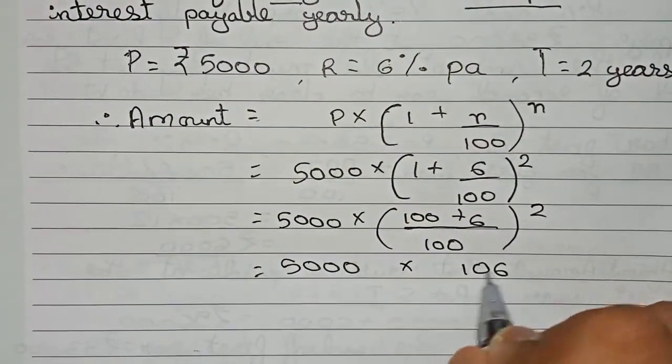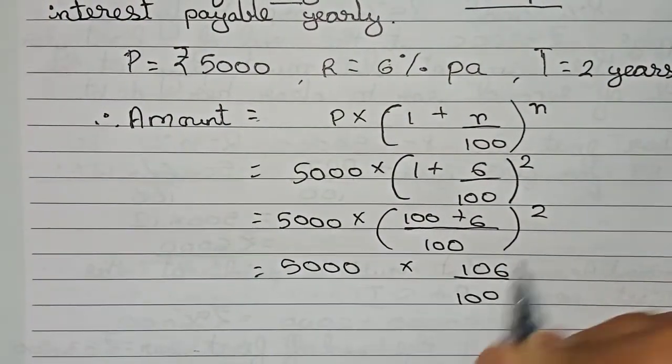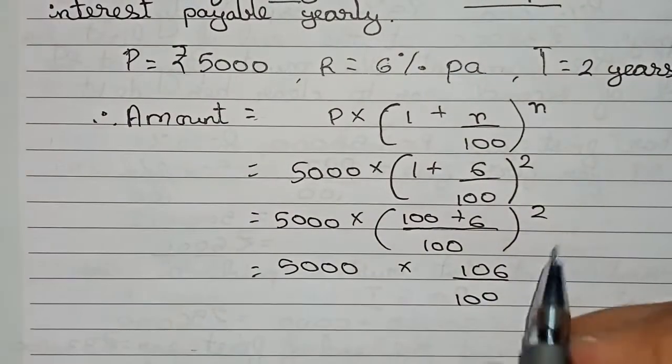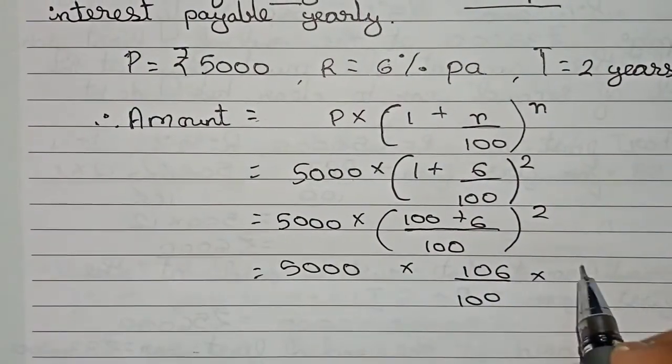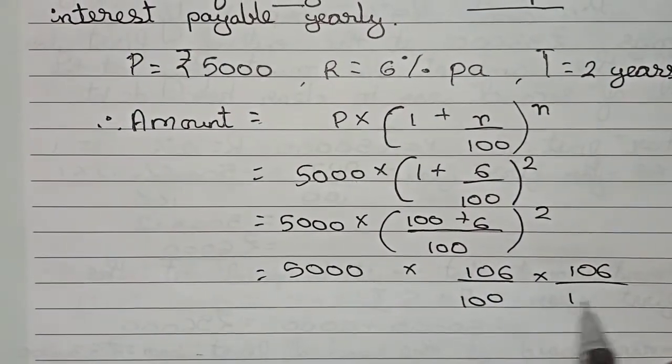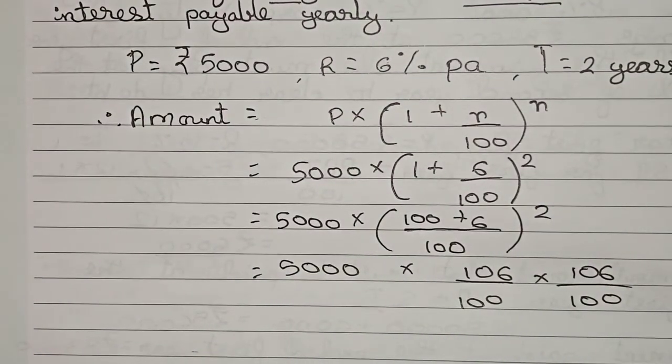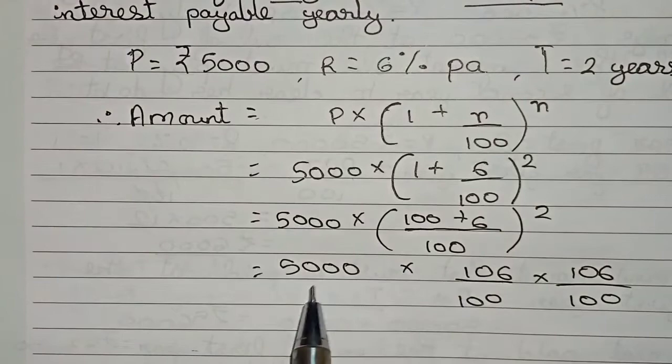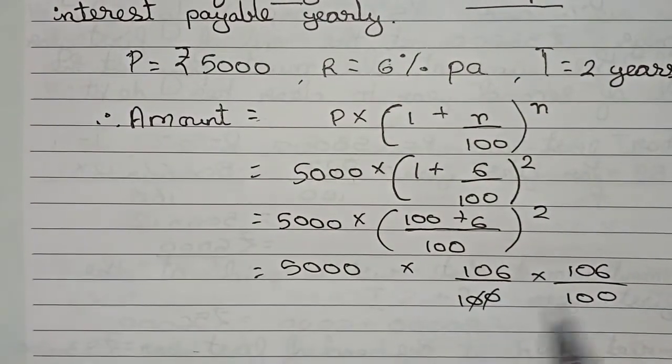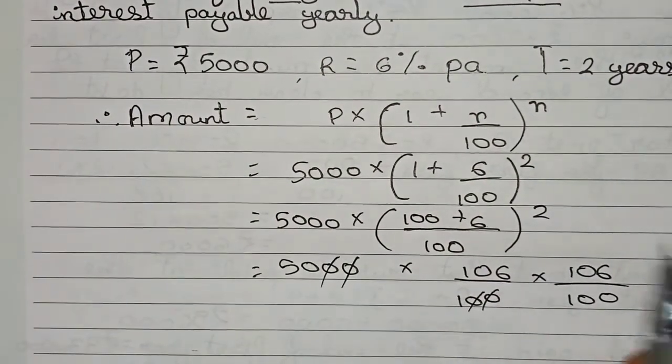So it becomes 5000 into 106 by 100, now to the power 2. Squared means we have to write this number two times: 106 times 106 by 100 times 100. Now solve this. First we cut the zeros.